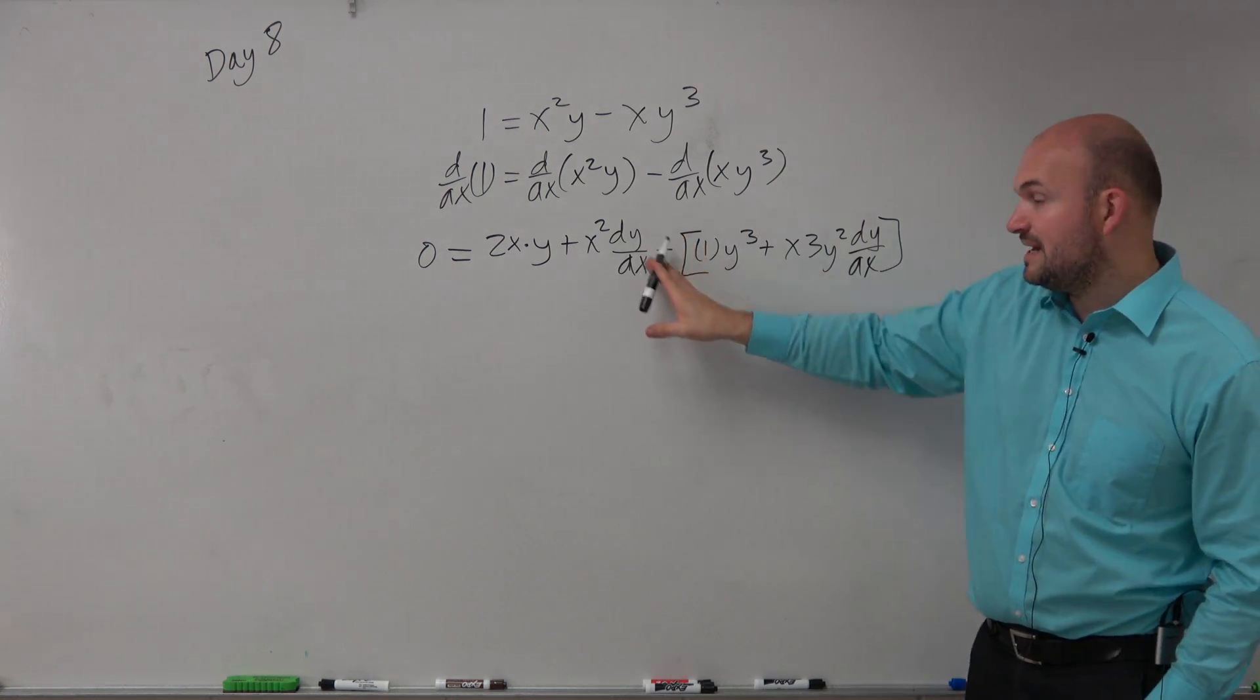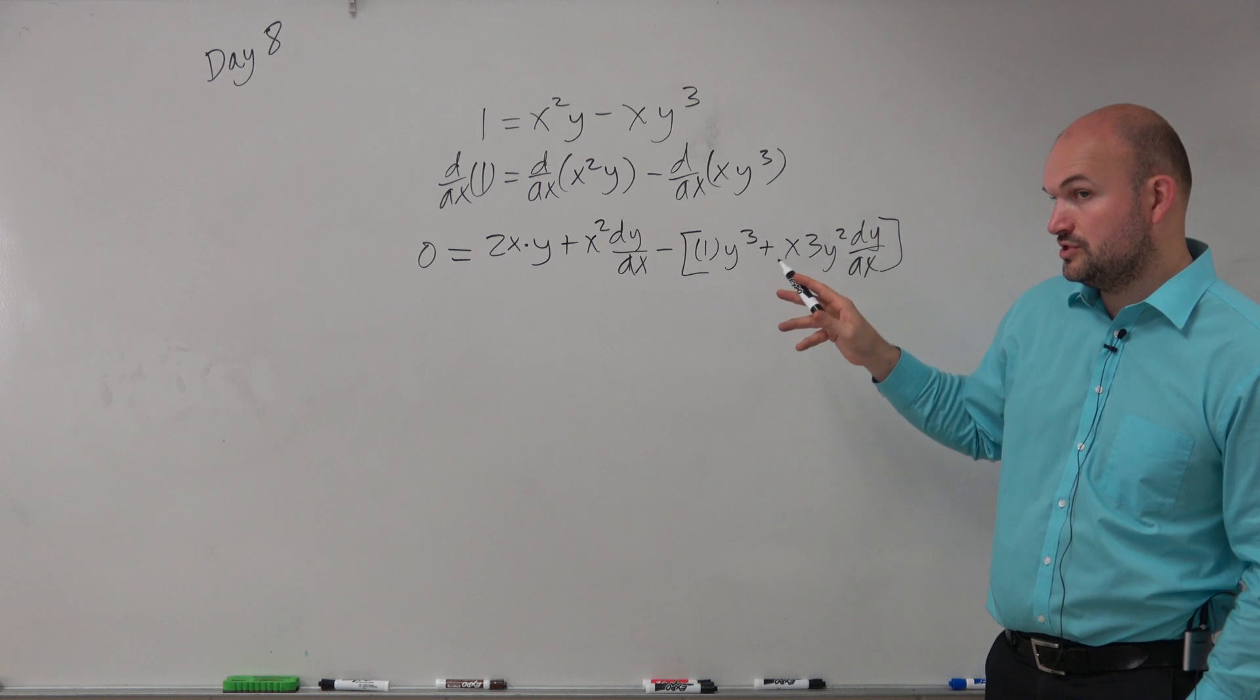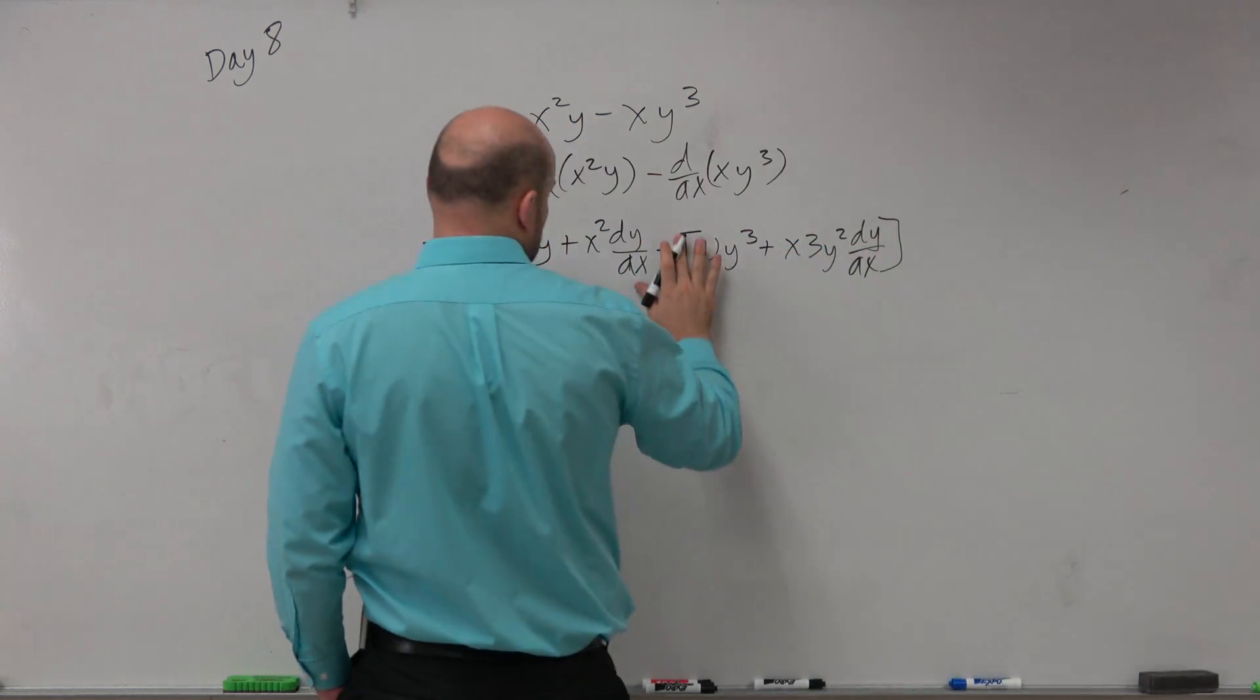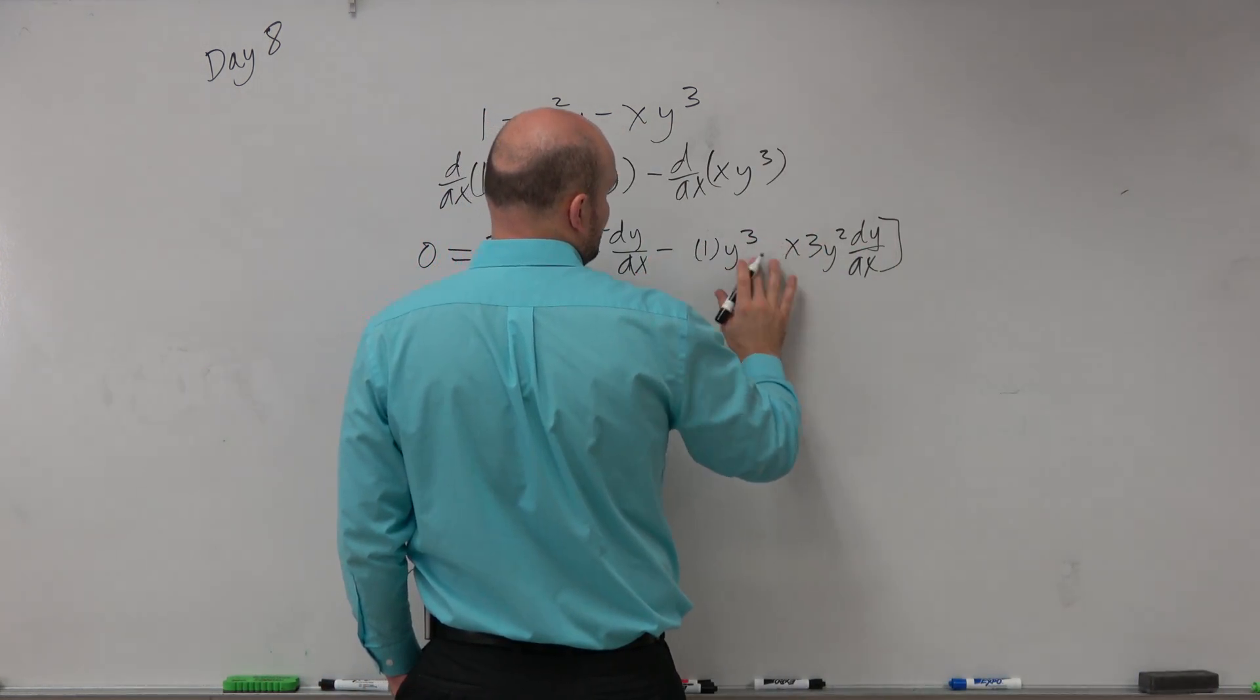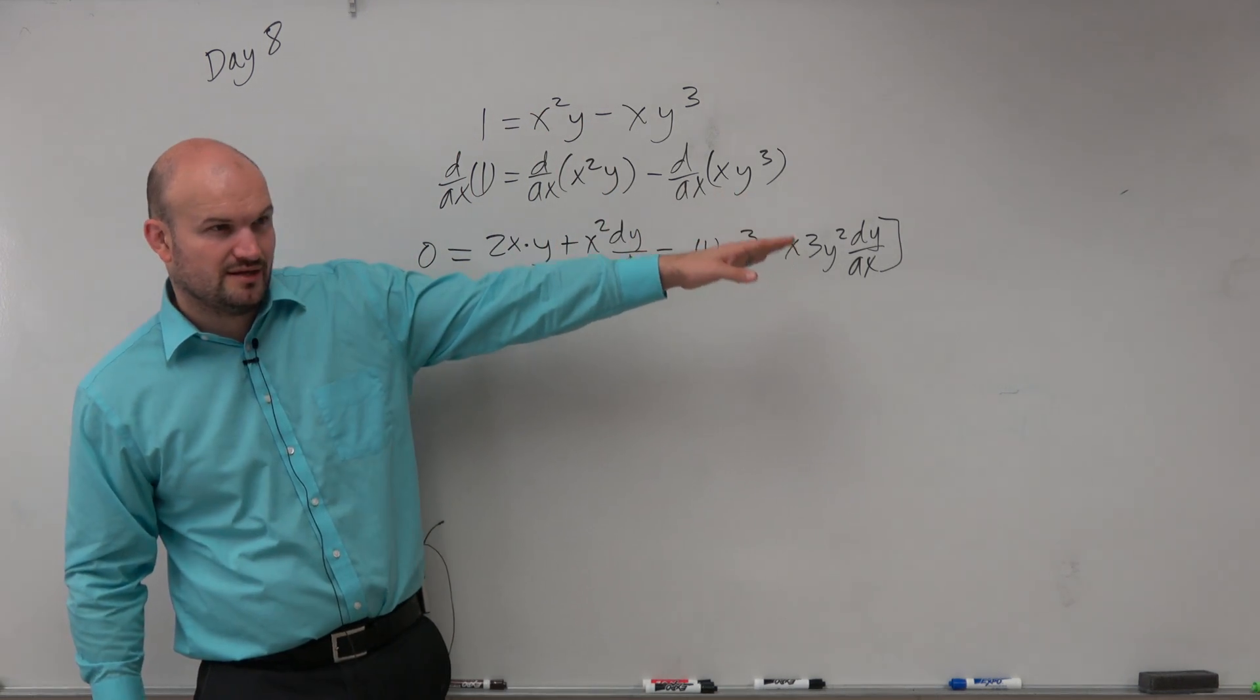And again, we can eliminate this bracket if we want to. Just make sure we distribute the negative times both of those terms. So I'm going to go ahead and do that. Just make that a negative, and then make sure that one was negative. Does everybody see what I did? I just distributed the negative.